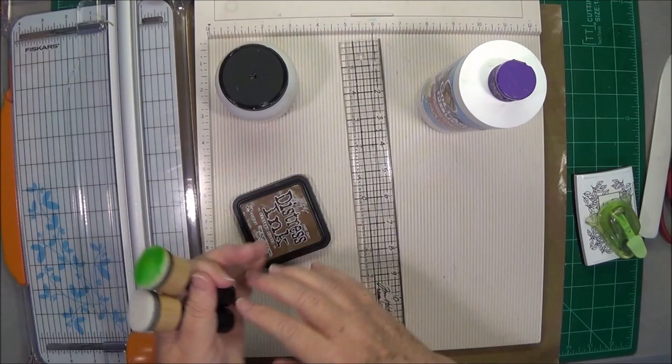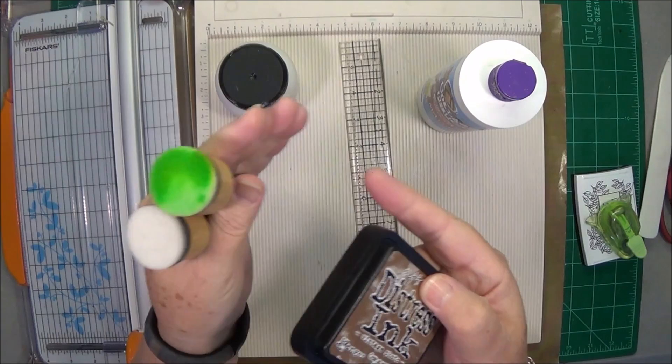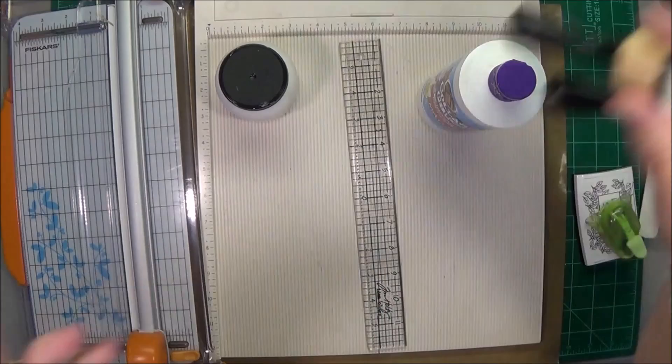The next one would be my Tim Holtz inks. Love my Tim Holtz inks and the round distress tools, ink tools. I don't like the square ones, the big square ones. I love the round ones though, but I have just about all of his ink colors. I love those. This is just one I grabbed down. All, again, all of this is in our shop.